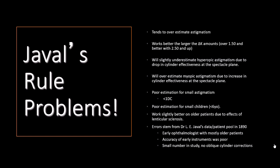Javal's rule has problems. It tends to overestimate astigmatism. It works better the larger the change in astigmatism or the difference in astigmatism, and it will slightly underestimate hyperopic astigmatism and overestimate myopic astigmatism. It's also very poor at small astigmatism, which is the most common type. It's also bad with children and older patients.